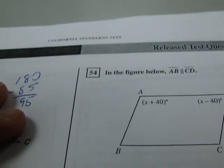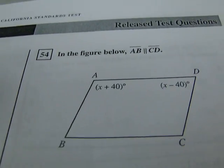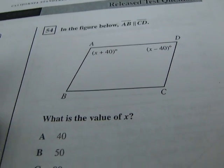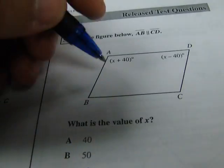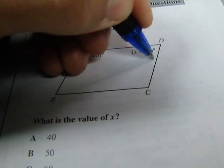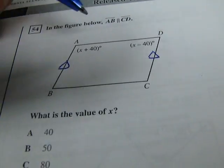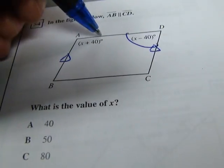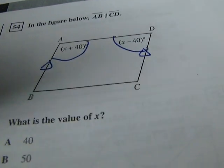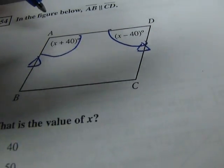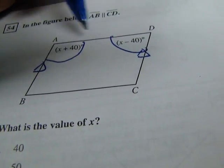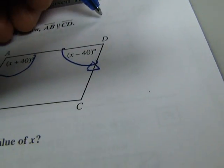54. In the figure below, AB is parallel to CD. What is the value of X? Okay, so saying that AB is parallel to CD. If these are parallel, then these are same side interior angles. Same side interior angles are supplementary. For that reason, these two angles have to add up to 180. So we can write this.